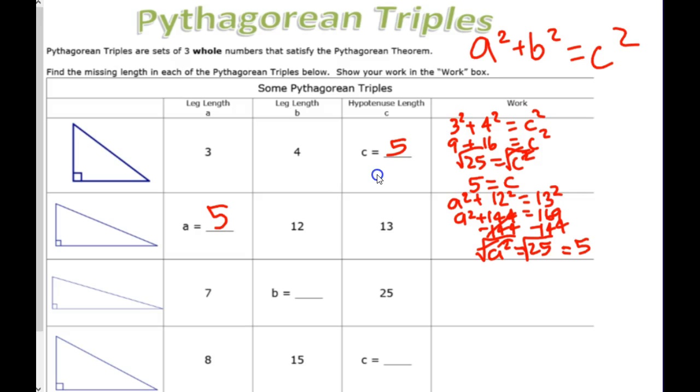You are permitted any time you see two of those three in the triple, you automatically know what the third one is. Now, this is getting back to old school methods where you memorize things, but I'm telling you, if you can just remember some triples, it'll save you some work.